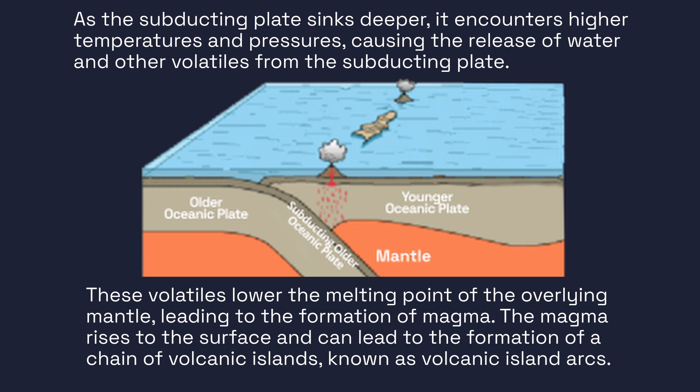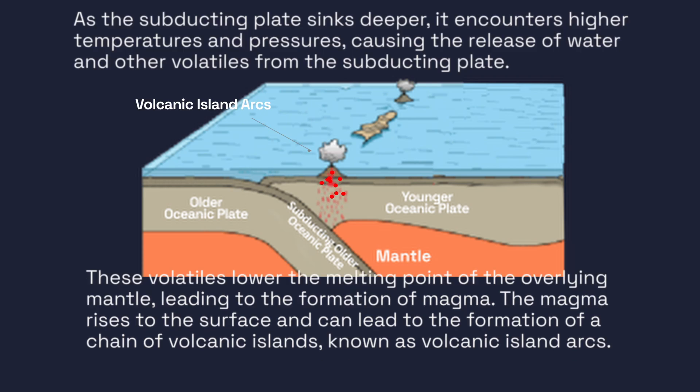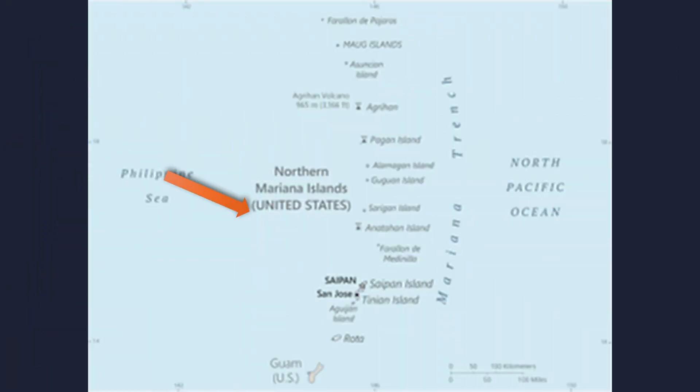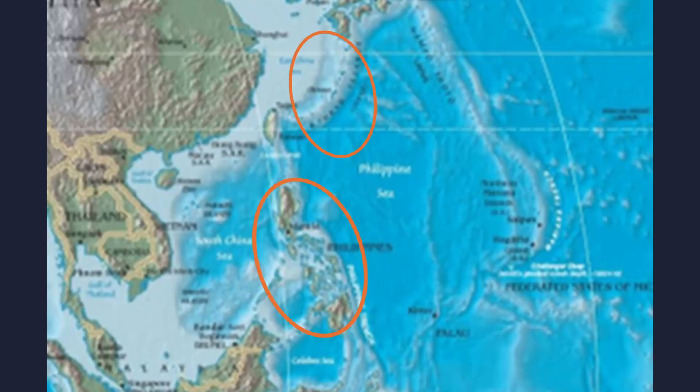As the subducting plate sinks deeper, it encounters higher temperatures and pressures, causing the release of water and other volatiles. These volatiles lower the melting point of the overlying mantle, leading to the formation of magma. The magma rises to the surface and can lead to the formation of a chain of volcanic islands known as volcanic island arcs, or simply island arcs. Examples include the Aleutian Islands and the Mariana Islands in the Pacific Ocean.